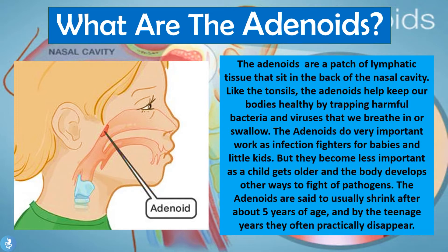The adenoids do very important work as infection fighters for babies and little kids especially. But they become less important as the child gets older and the body develops other ways to fight off pathogens. The adenoids are said to usually shrink after about five years of age and by the teenage years they often practically disappear. So the adenoids are not a structure that is maintained throughout life — usually present until age five, then shrinking through the teens until they practically disappear altogether.